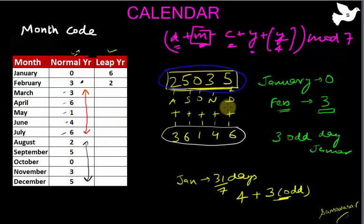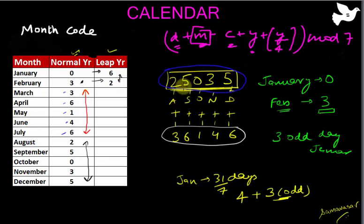In a leap year, January becomes 6 and February becomes 2. One thing to note: you might expect January to be the lowest, but in a leap year 6 is greater than 2 — something to remember. Once you remember this table, the method is very simple and straightforward.